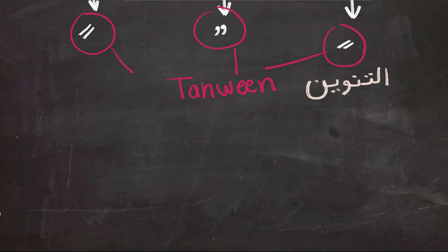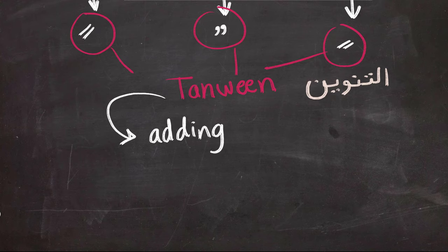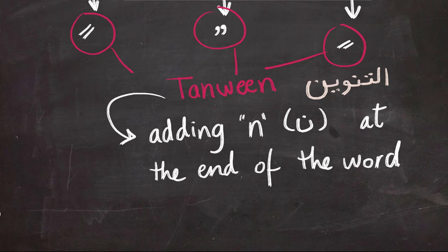Tanween means adding N or Noon at the end of the word. We only add it in pronunciation but we don't actually add it in writing.